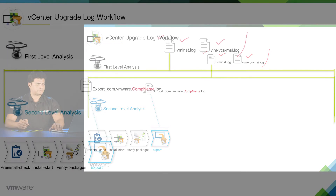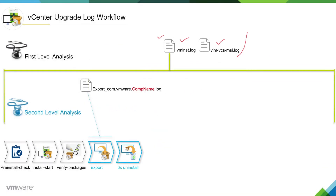The next phase is the uninstall phase, where we can see there will be another second level log created for each and every MSI package which is getting uninstalled. So if there is any package that is not being uninstalled properly, you will find that package name in vminstall.log or in vimvcs-msi.log.